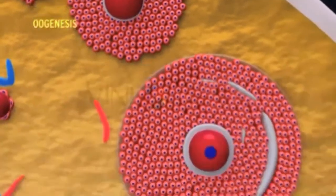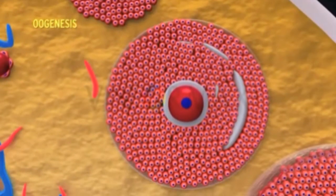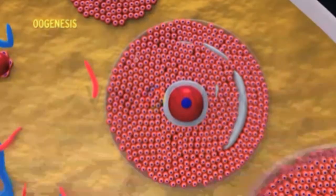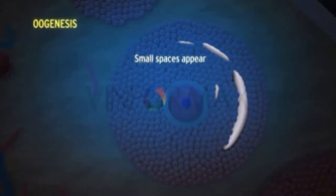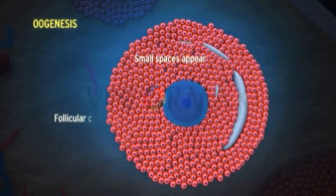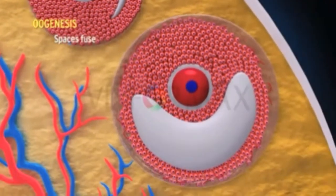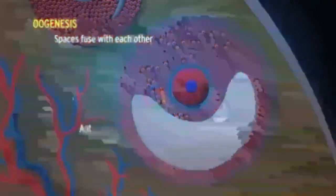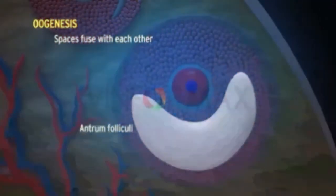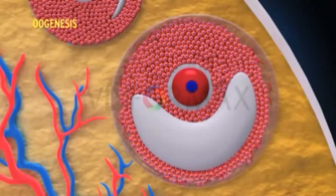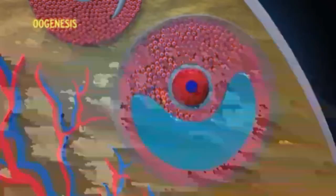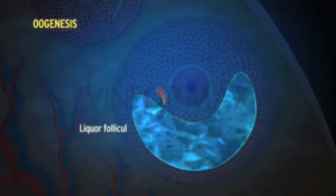The multiplication of follicular cells gains space, and as a result, small spaces appear between the follicular cells. These spaces fuse with each other, forming the antrum folliculi, which is filled with a fluid called liquor folliculi.